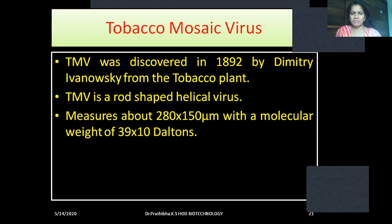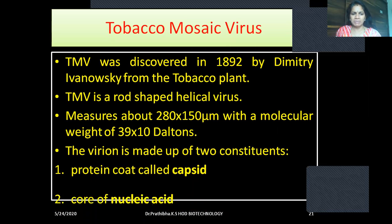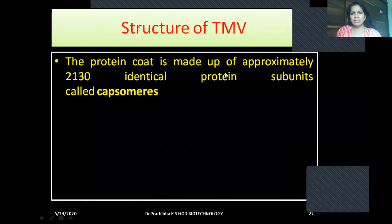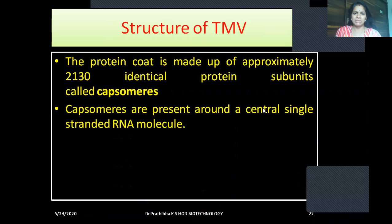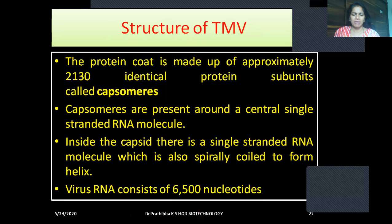It measures about 280 by 150 micrometers with a molecular weight of 39 × 10 daltons. The virion is made up of two constituents: a protein coat called capsid and a core of nucleic acid. The protein coat is made up of approximately 2,130 identical protein subunits called capsomeres. Capsomeres are present around a central single-stranded RNA molecule. Inside the capsid, there is a single-stranded RNA molecule which is also spirally coiled to form a helix. Virus RNA consists of 6,500 nucleotides.